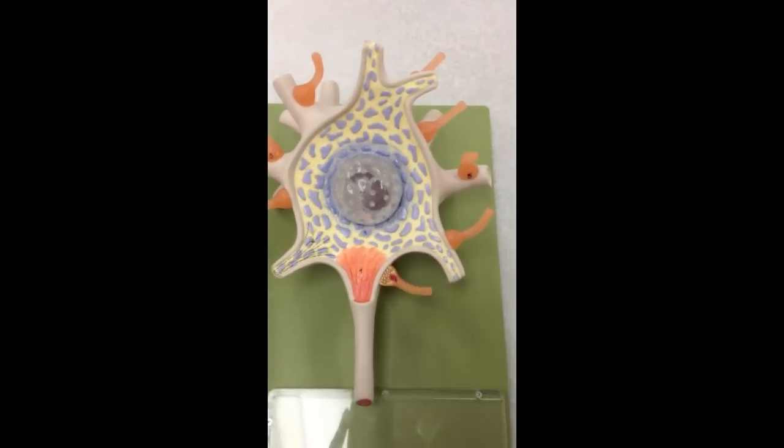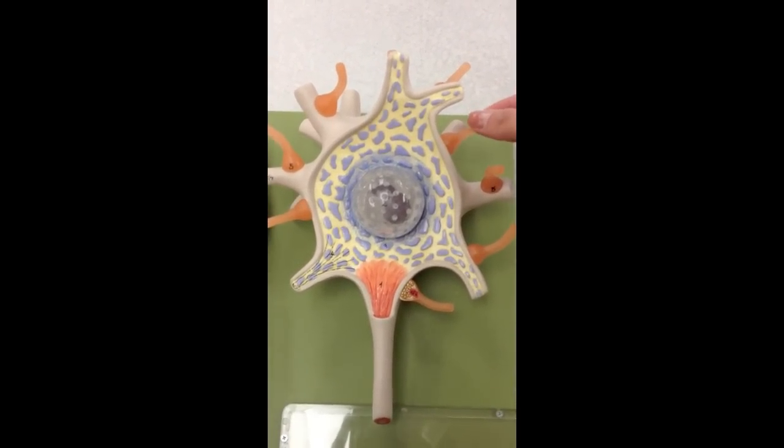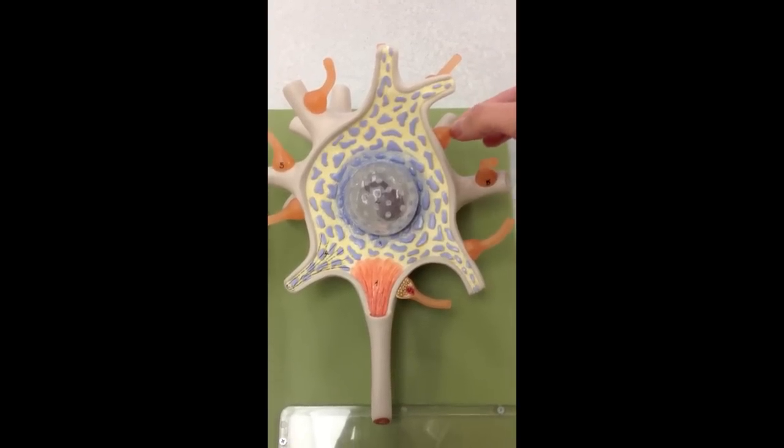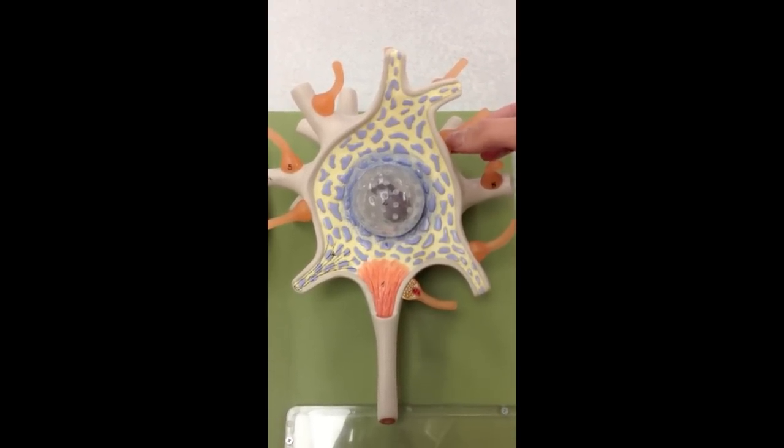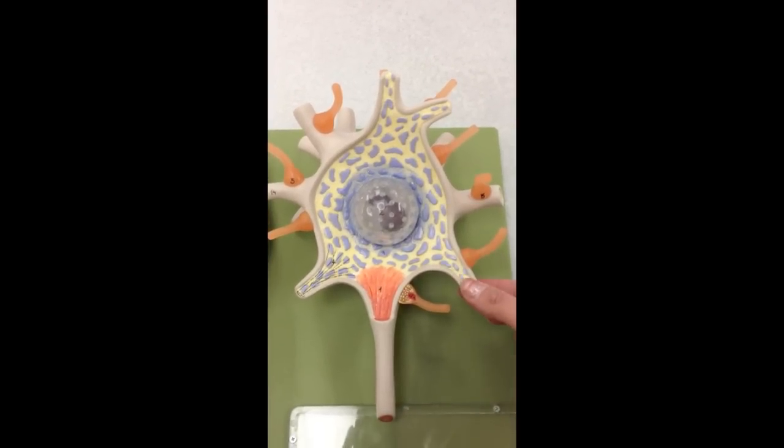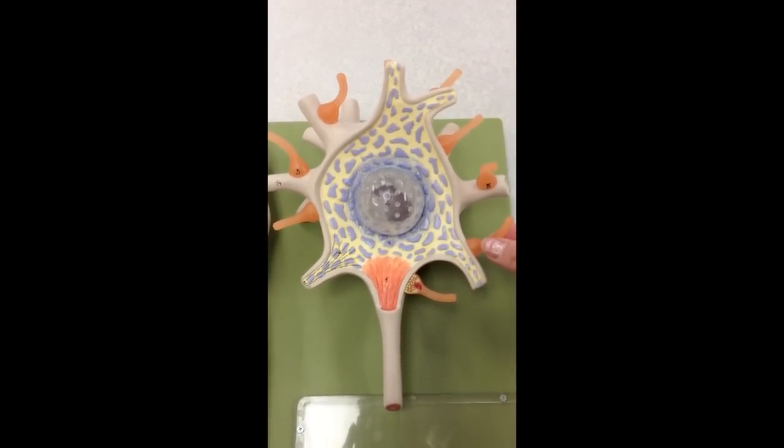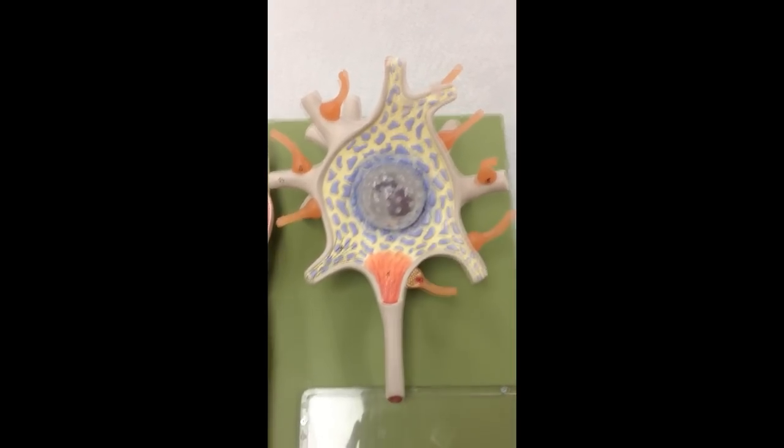Don't confuse those with these orange areas. These are synaptic end-bulbs that are going to release neurotransmitter to the cell body and the dendrites. So the gray is the dendrite. The orange, which you don't even have to label in class, is the synaptic end-bulb.